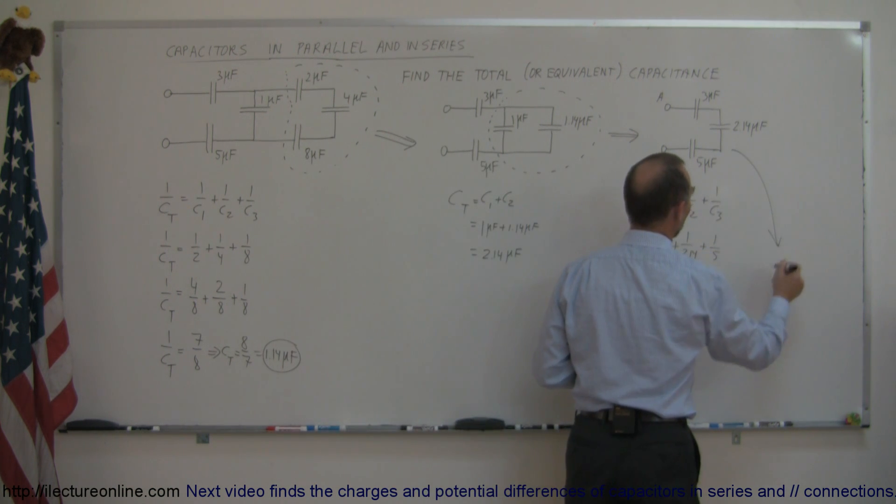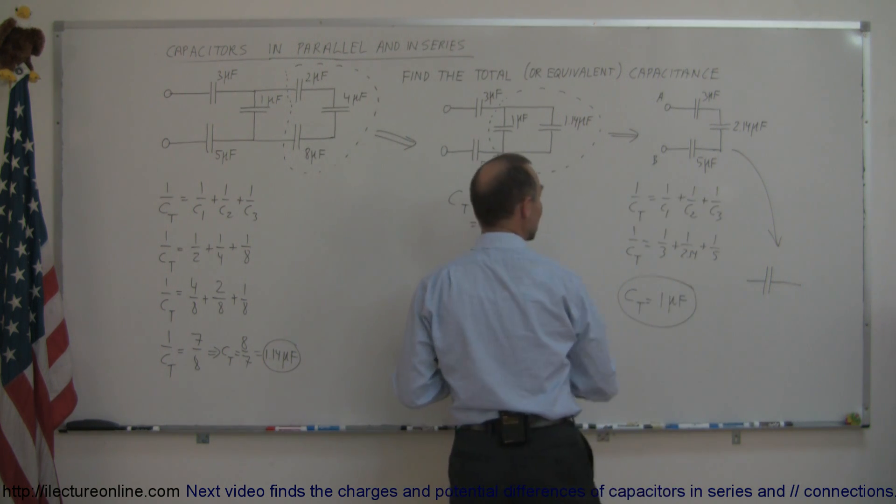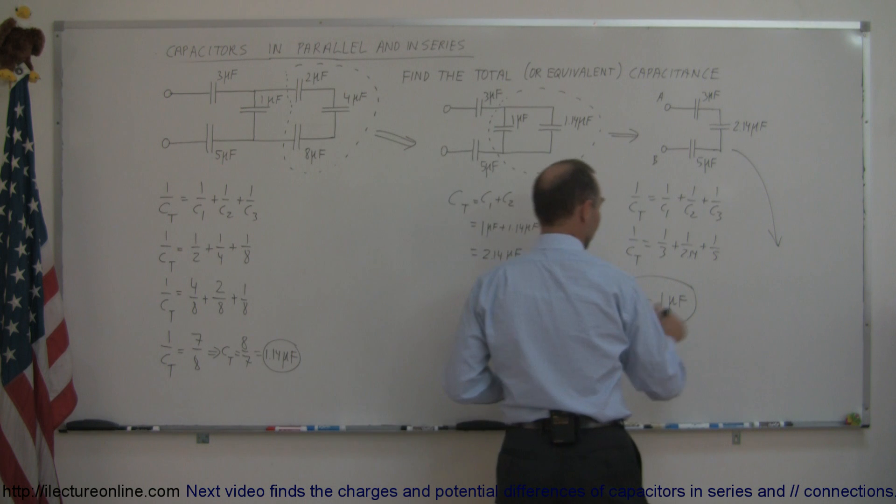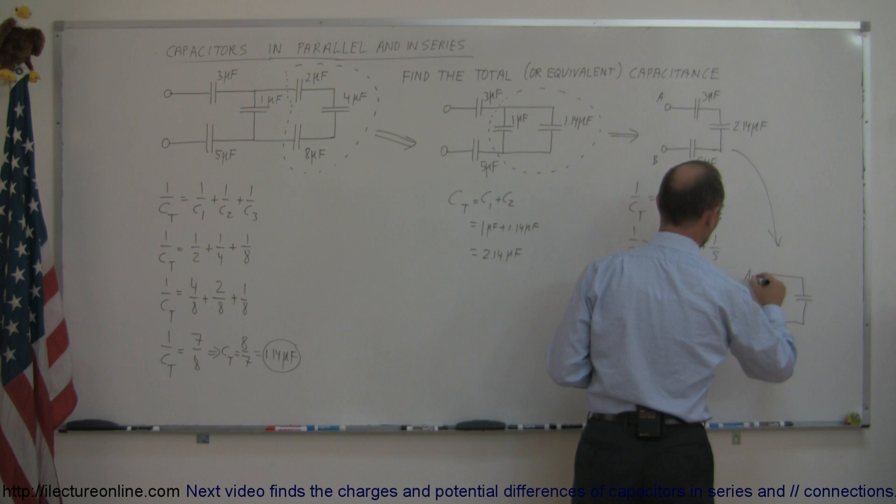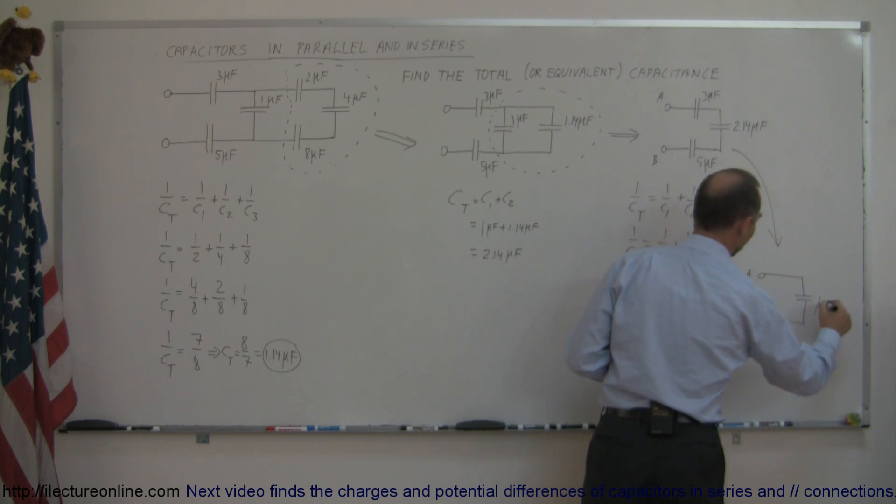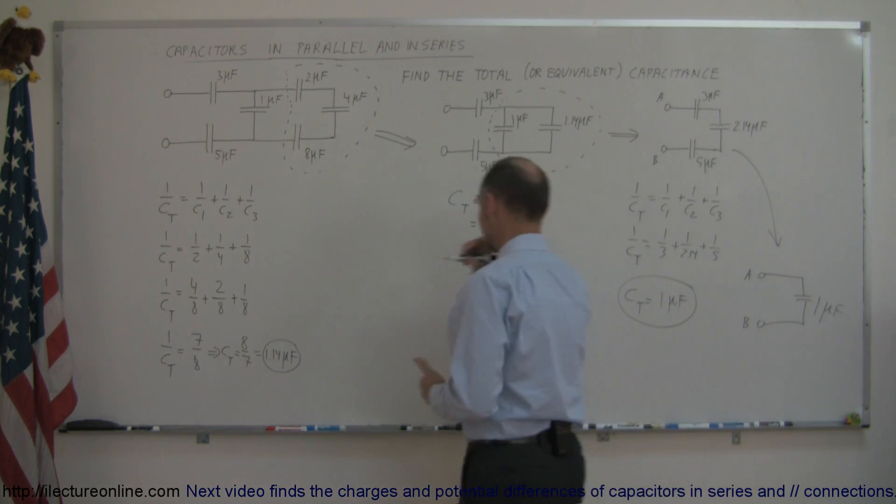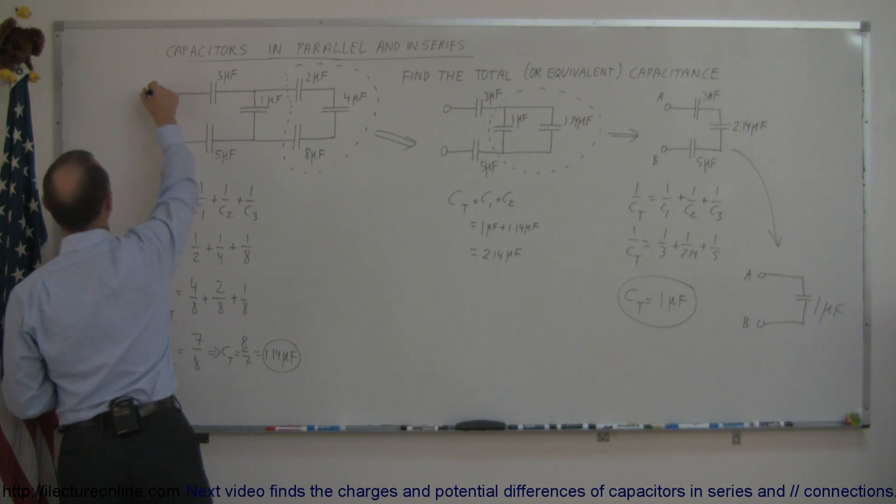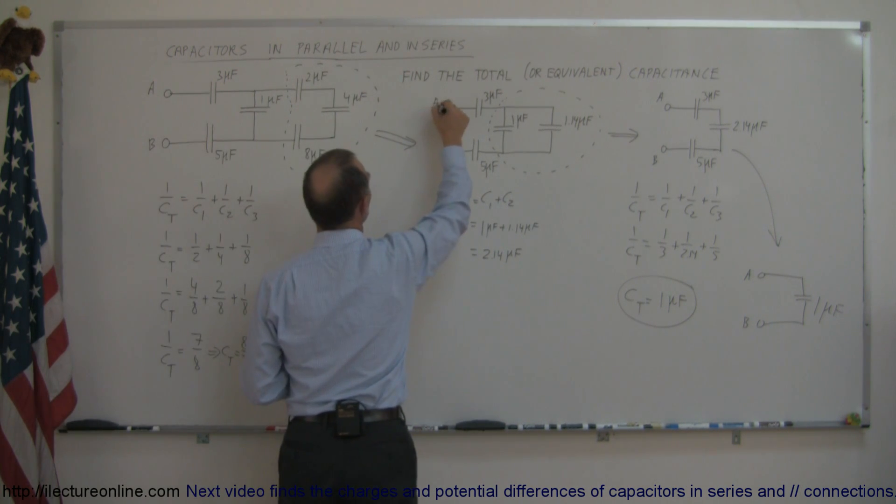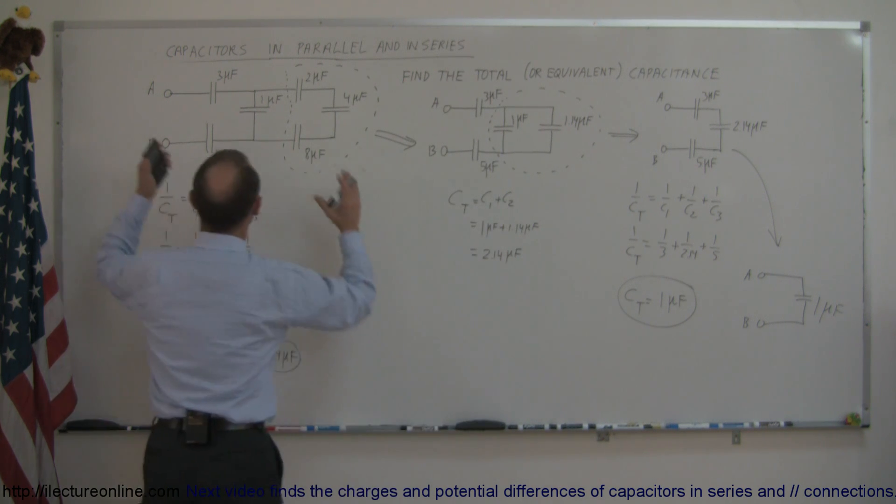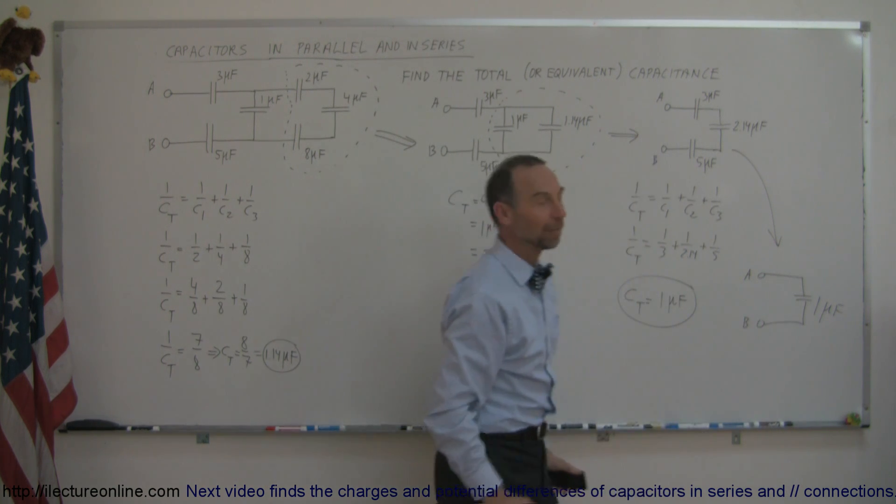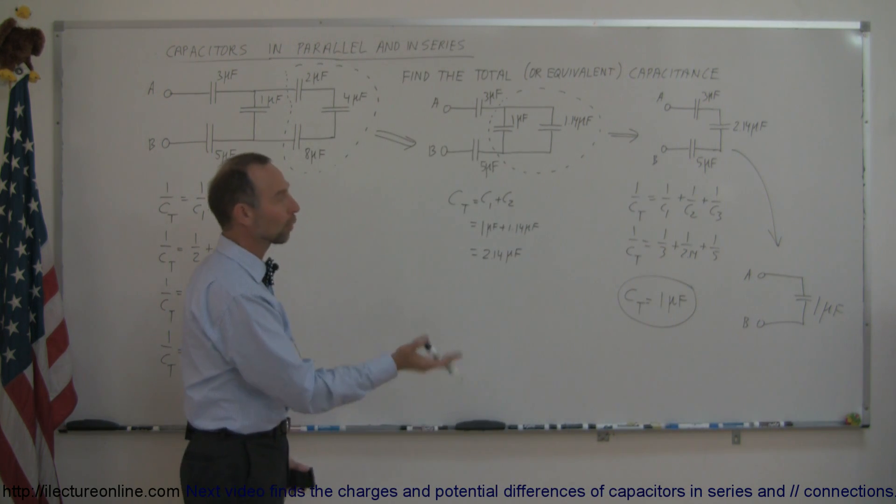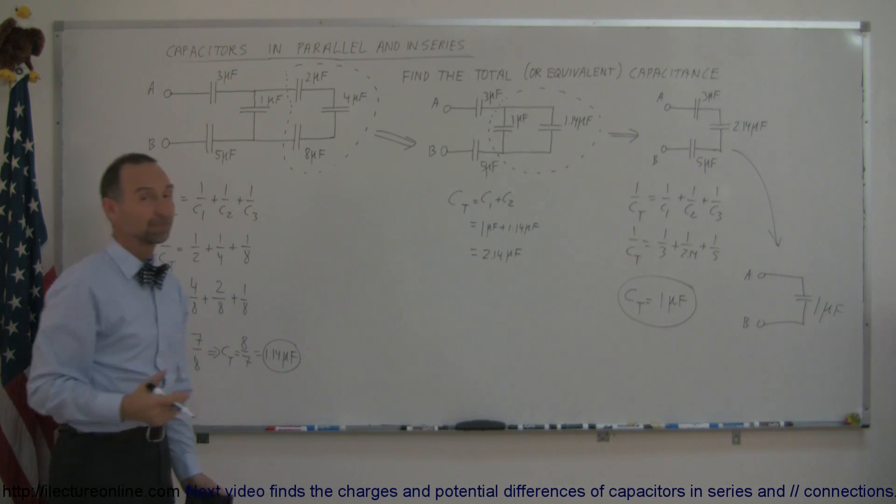What that means is this final combination can now be written as a single one microfarad capacitor. You can see that this entire circuit, the way it looks here, can be replaced by a single one microfarad capacitor. That's the total or equivalent capacitance of this particular circuit, and that's how you do that problem.